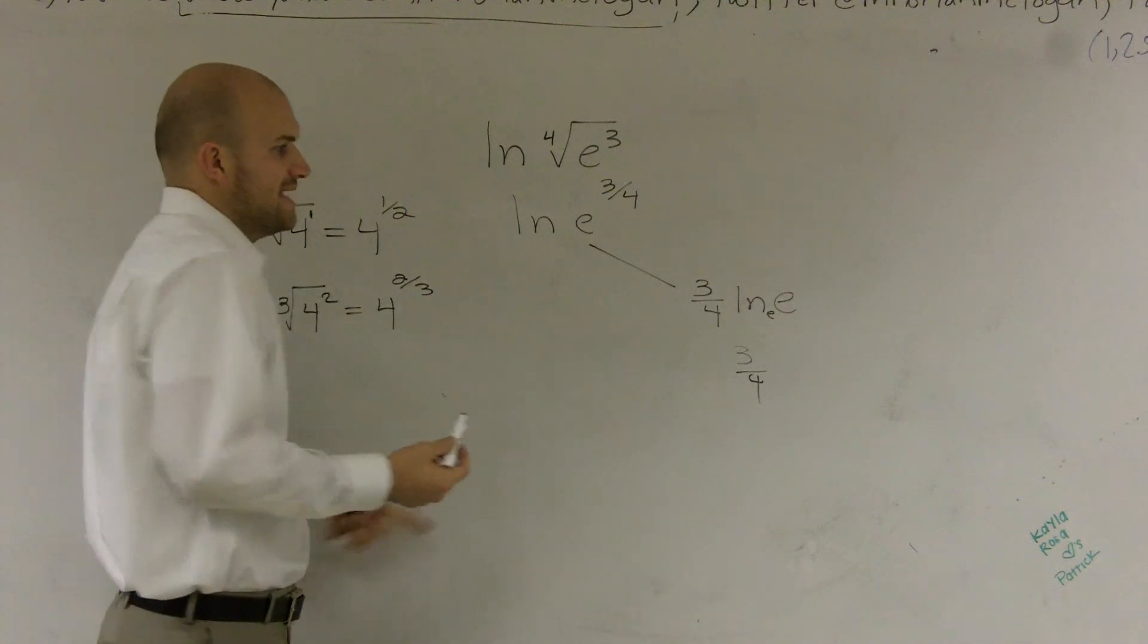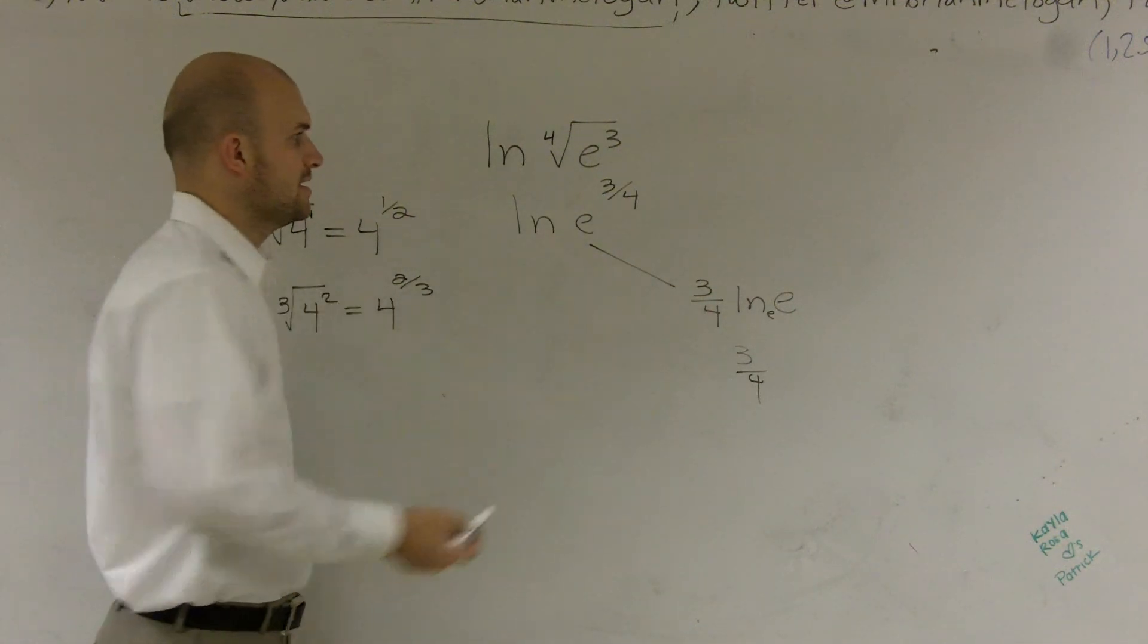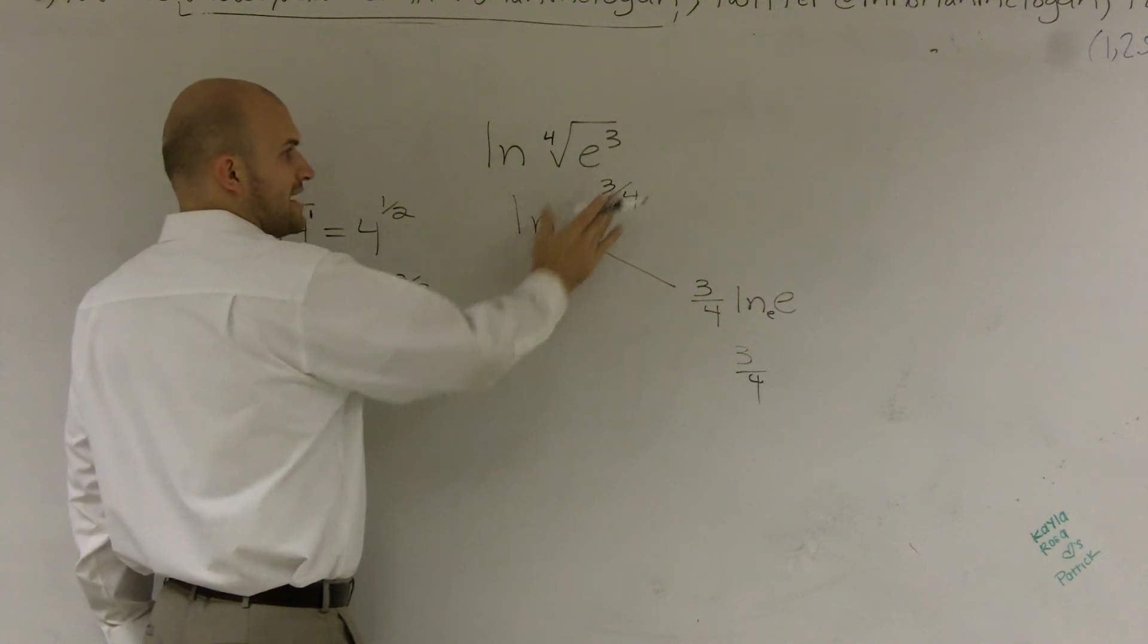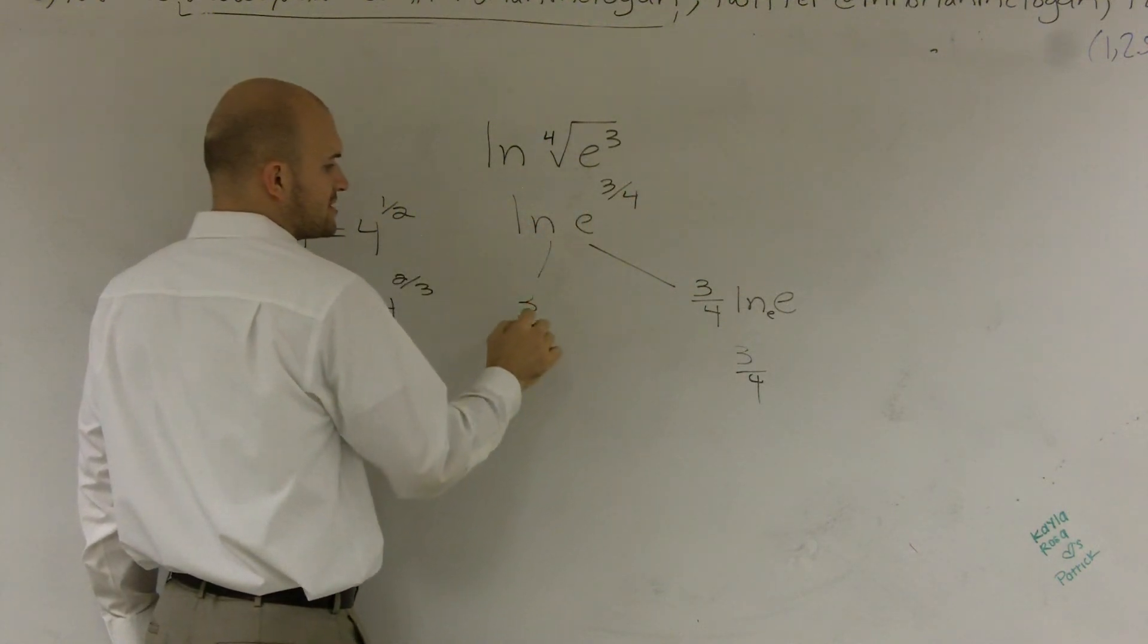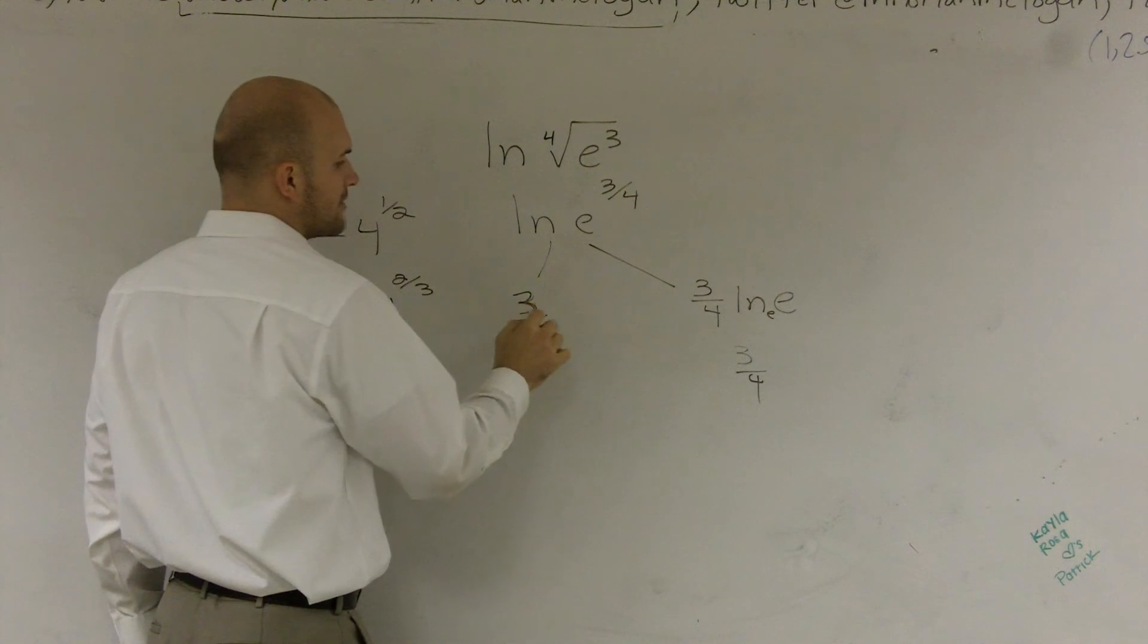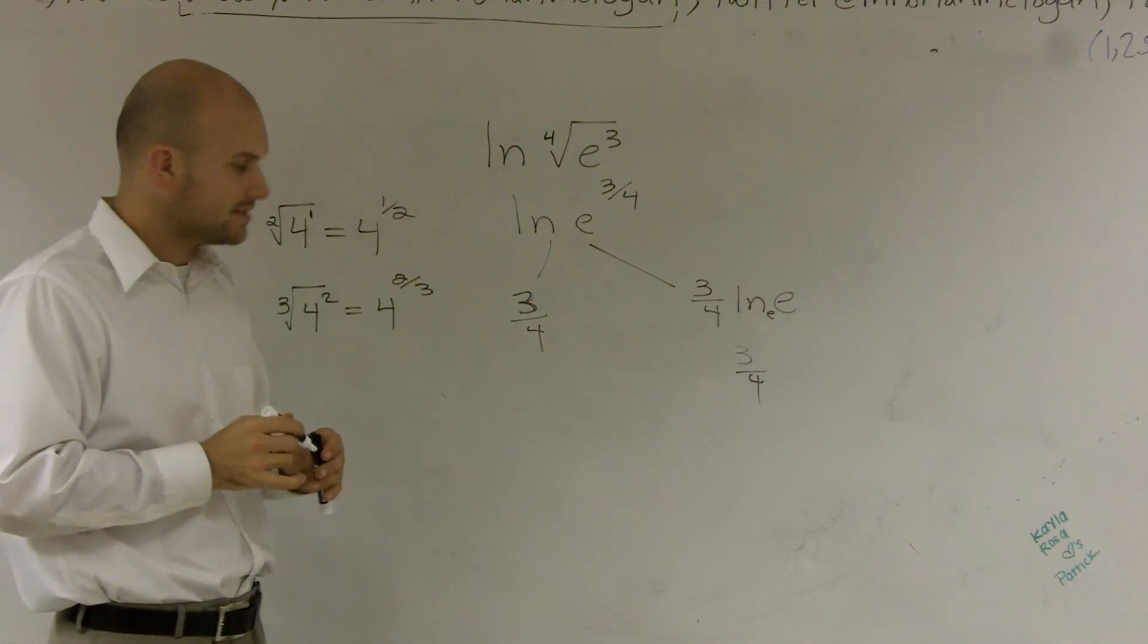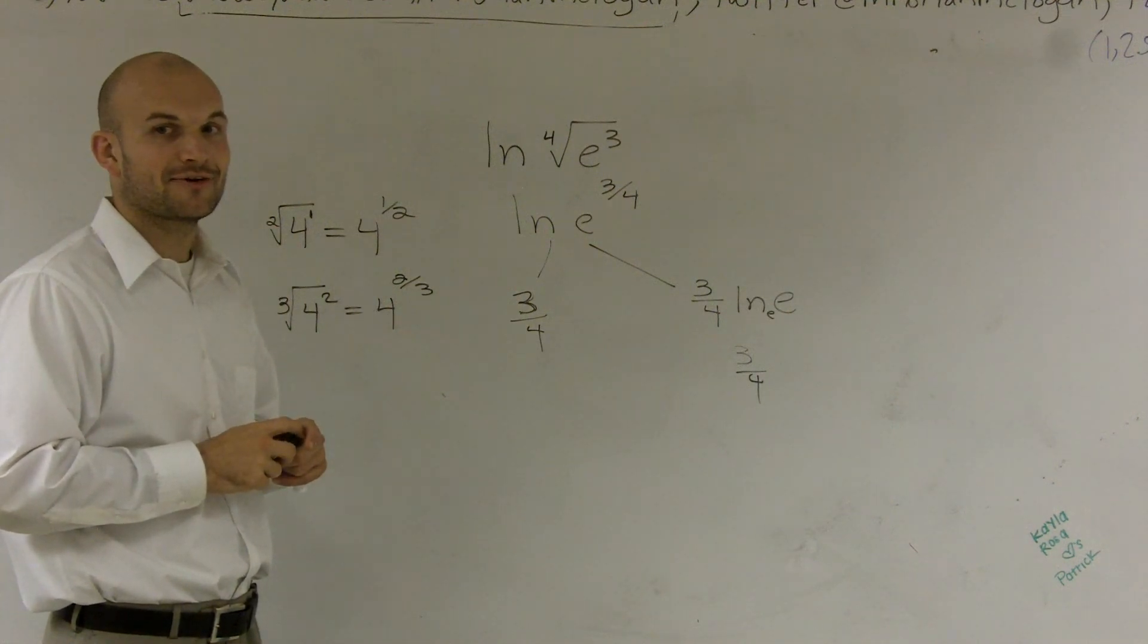Or there's another rule that just states: whenever you have ln of e and it's raised to a power, your answer is just going to be 3/4. It's just going to be what your power is. So that's how you can evaluate this logarithm by using your mind, not your calculator.